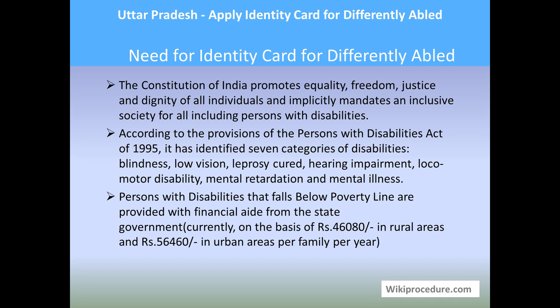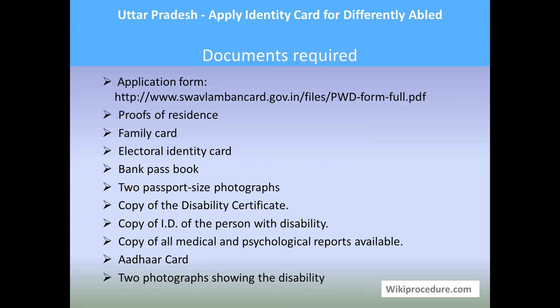These are all the categories in which a person can be given a special ID card. Persons with a disability who fall below the poverty line are provided with financial aid from the state. The state government provides Rs. 46,080 in rural areas and Rs. 56,416 in urban areas per family per year. In order to avail these benefits, you need to have the differently abled card. There are many other areas where the differently abled person's card will be helpful.